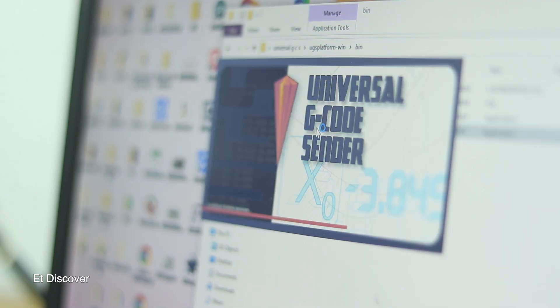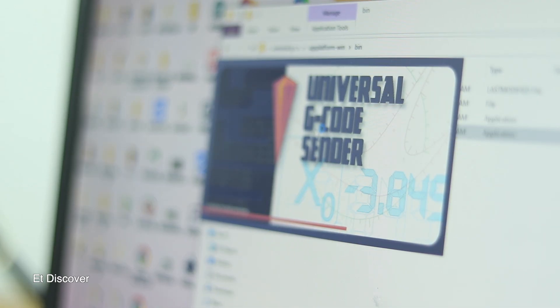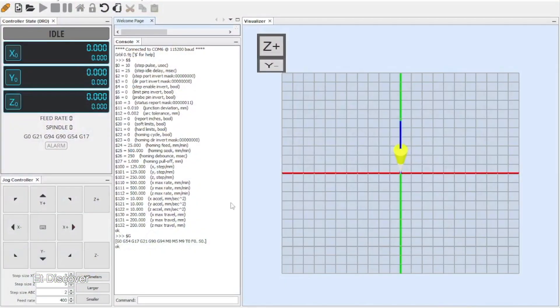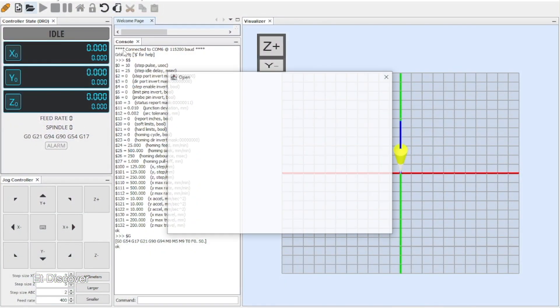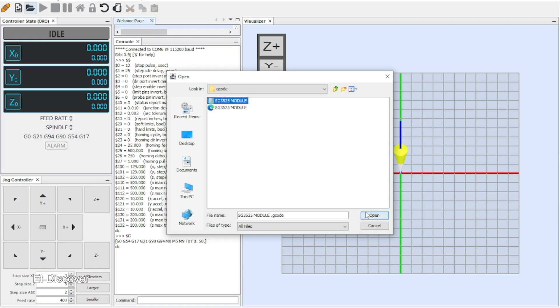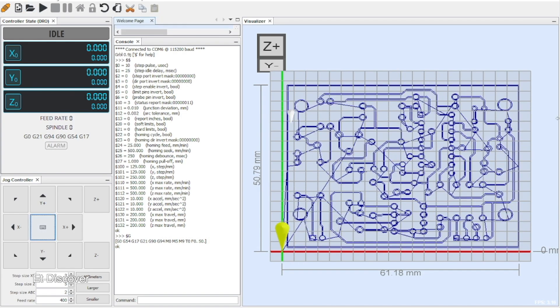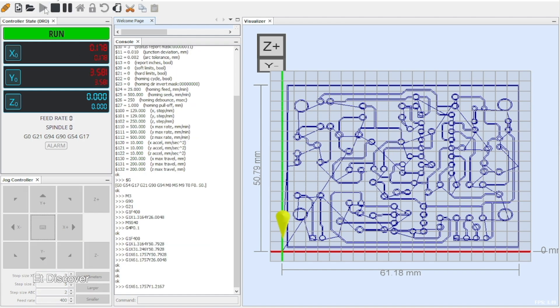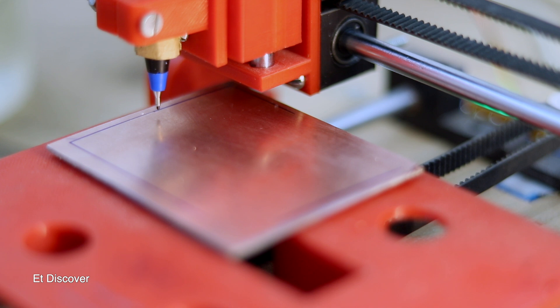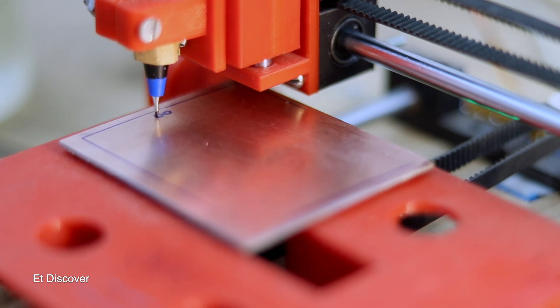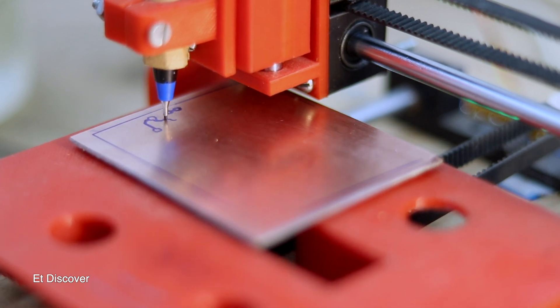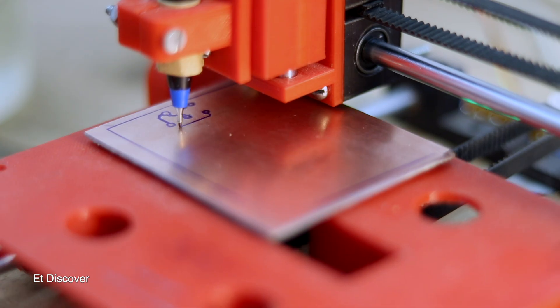Next I open another software to send G-code to my CNC called Universal G-code Sender. Here you can see the interface. First I have to connect my right Arduino port. After that I have to import my G-code file to send to my CNC, so I import it. I send this file to my CNC and my CNC is working according to my G-code. Let's check the progress and the final result.